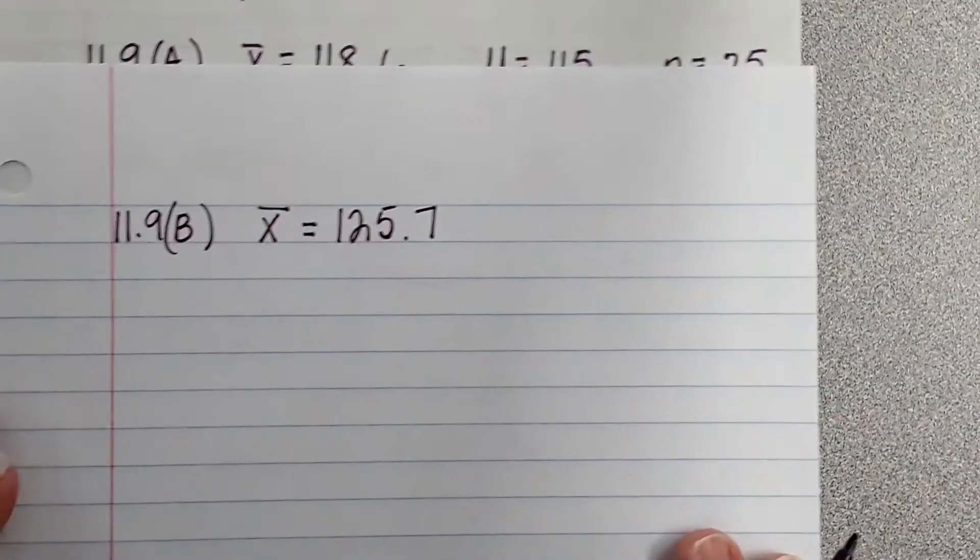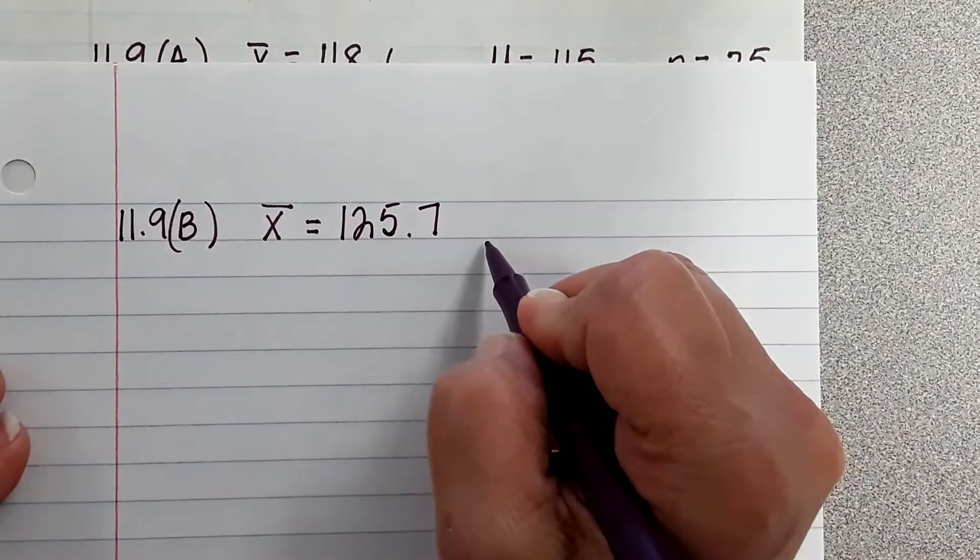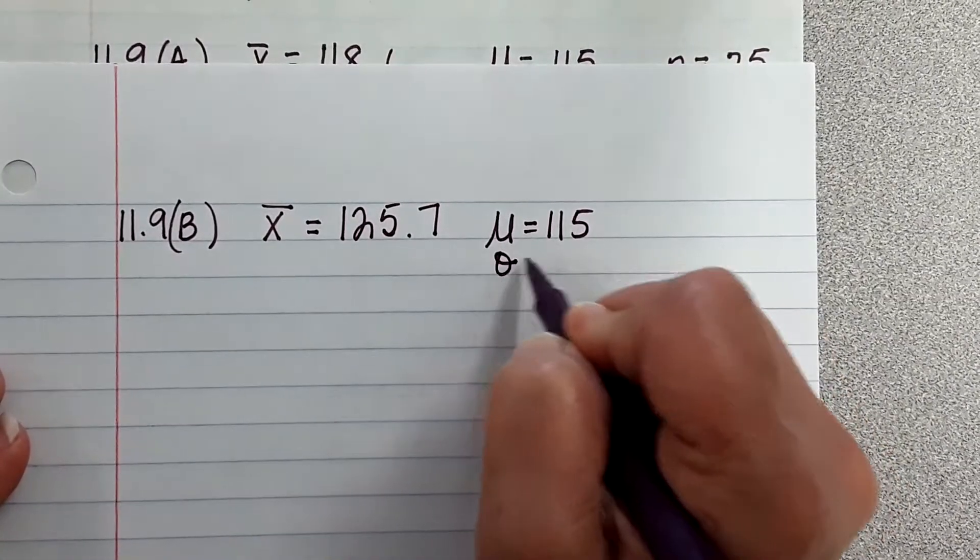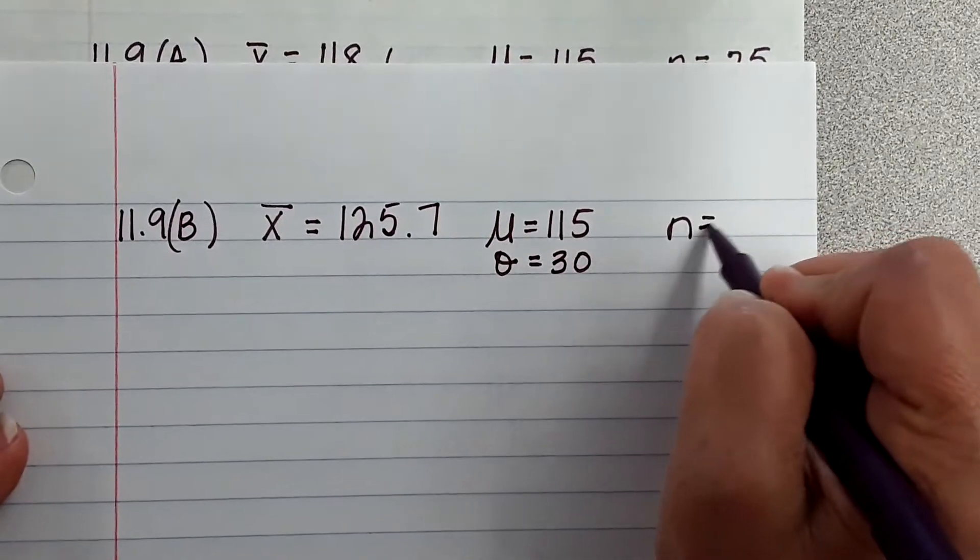Okay. Yeah. That's okay. And then our... You guys, our mu hasn't changed, and neither has our sigma. We're still on that same problem, and our n is still 25.